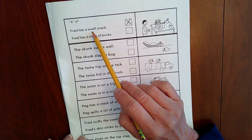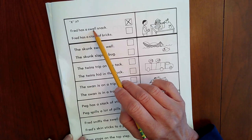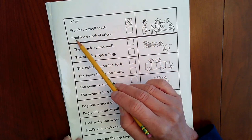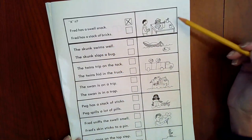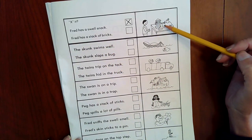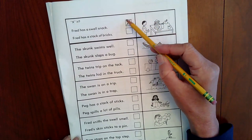Fred has a swell snack. Swell means good or nice. Fred has a stack of bricks. I'm looking at the picture. It looks like it's a snack, right? It looks like a pretty good snack or a swell snack. So I'm going to check this one.